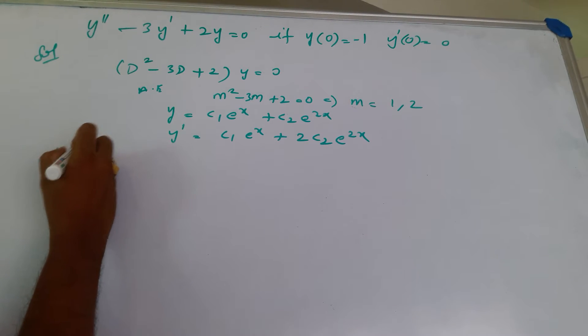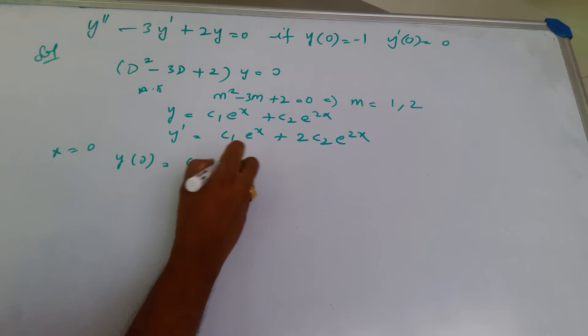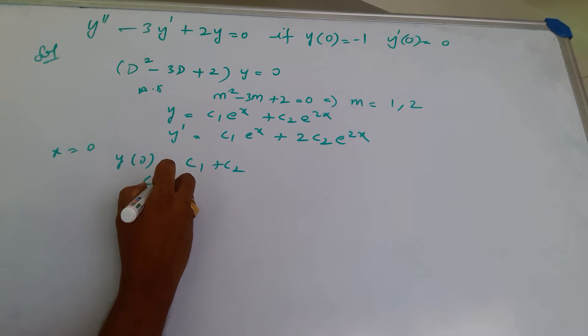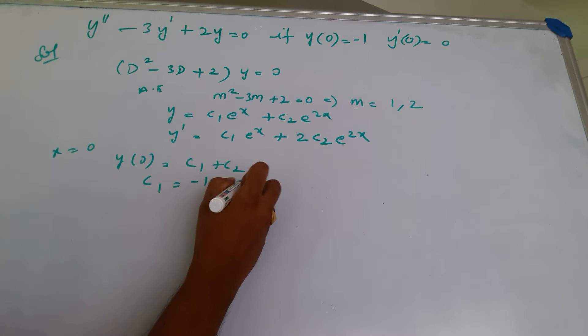When x is equal to 0, y of 0, we will get c1 plus c2, that is c1 equals minus 1 minus c2.